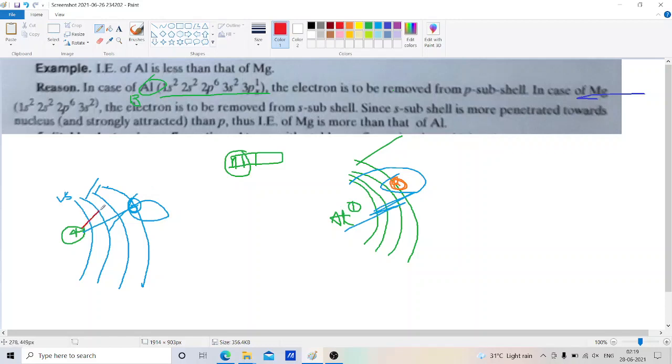More penetrated means the distance between 3s and the nucleus is less than the distance between 3p orbital and the nucleus.